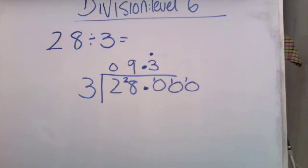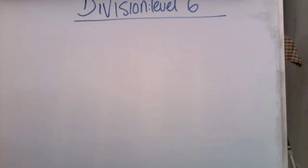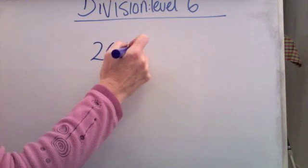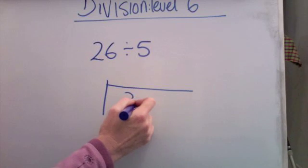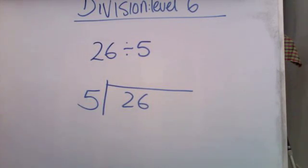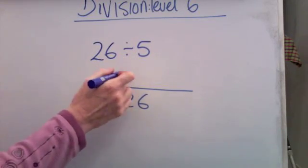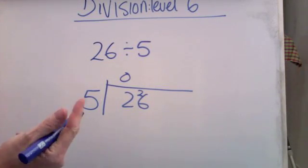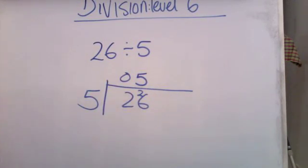Let's try another one. 26 divided by 5. 26 on the inside, 5 on the outside. How many fives in two? Well, it's not big enough, I'll just carry that forward. How many fives in 26? 5, 10, 15, 20, 25. So that's five fives of 25 and there's one left over.